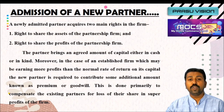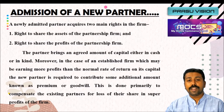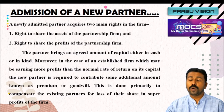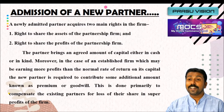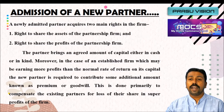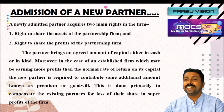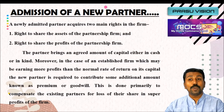However, in the case of an established firm which may be earning more profit than the normal rate of return on its capital, the new partner is required to contribute some additional amount known as premium or goodwill. If the firm earns super profit — more than the normal profit — the new partner must contribute an additional amount along with capital, known as premium or goodwill. We have already learned how to calculate the amount of goodwill.